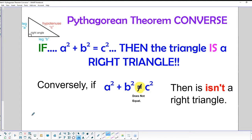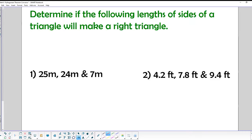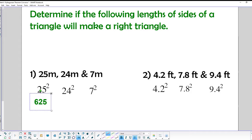So let's try a couple of problems like that. Determine if the following lengths of the triangle will make a right triangle. In order to do that, we're going to square each side. So set it all up. We've got 25 squared, 24 squared, and 7 squared. And then the other one's squared, the decimal squared. So the first one I get, for 25 squared, I get 625. For 24 squared, I get 576. And for 7 squared, I get 49. And then the other numbers all squared look like that.